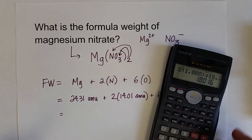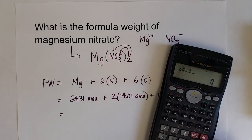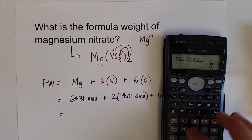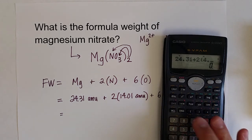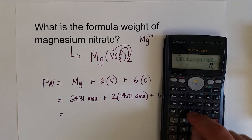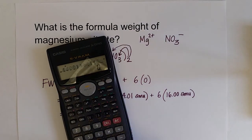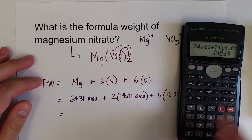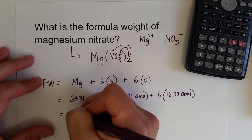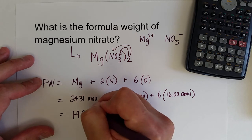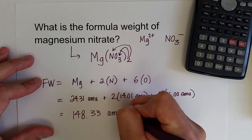Let's throw this into our calculator. We've got 24.31 for magnesium, plus two times 14.01 for nitrogen, plus six times 16.00 for oxygen. And that will give us a value of 148.33, and with two decimal places on all of those atomic masses, that's going to work. So the formula weight for magnesium nitrate is 148.33 amu.